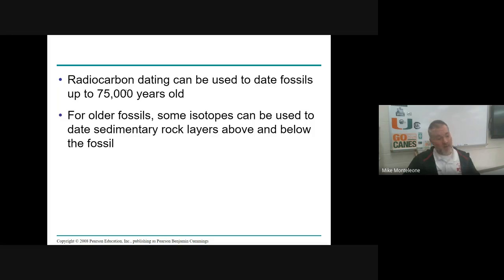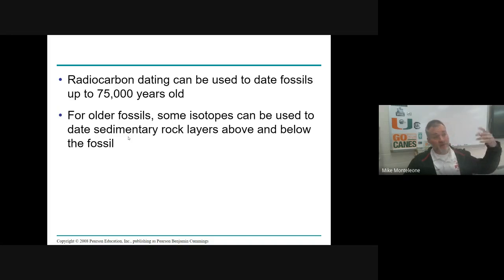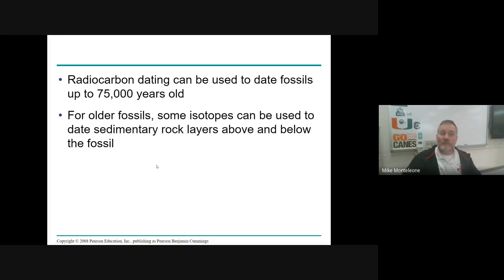We use carbon dating — isotopes of carbon, carbon-14 — to date things that are more recent. The half-life of carbon-14 is in the neighborhood of 5,000 years. For rocks as old as the earth, we look at other isotopes — I want to say lithium might have a half-life of about 1.3 billion years. So it depends on your guess as to how old the object is; you'll look for and analyze different radioisotopes.